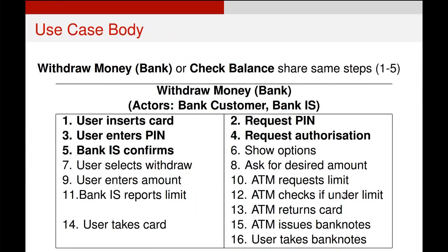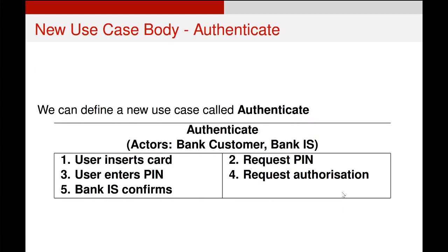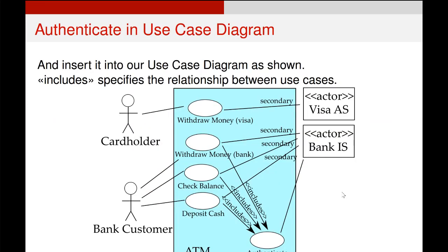There are ways of sharing steps between use cases. Those bolded steps are shared between the withdraw money and check balance use cases, so what we can do instead is create a new use case called Authenticate. This contains all of those shared steps. We add the authenticate use case to our diagram and then add a line from the use cases that include it to the new use case — so you can see the lines going from withdraw money, check balance, and deposit cash into authenticate.